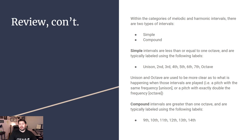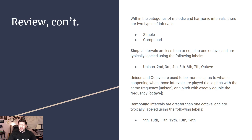A compound interval is going to be greater than one octave. So we are talking about things like ninths, tenths, elevenths, twelfths, thirteenths, and fourteenths. Getting into fifteenths and above, we are talking about things that are in the double octave or two octaves above. Realistically we don't really need to worry about those at this time because it's a very large interval, and we're going to keep things simple so you can understand the concepts.